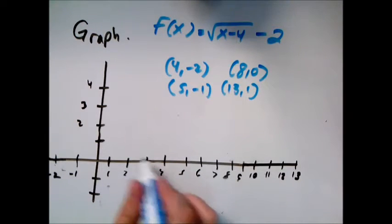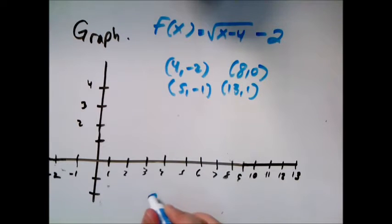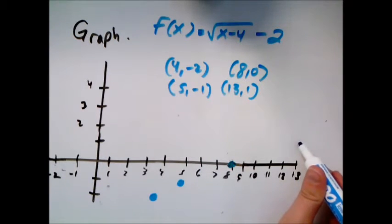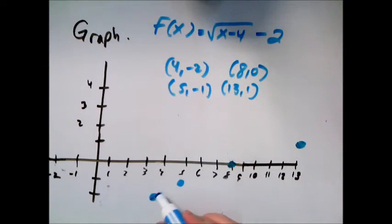All right, so 4, negative 2 is over 4 down 2; 5, negative 1 is over 5 down 1; 8, 0; and then 13 and up 1. So notice all these have the same basic kind of half parabola shape. It's just a matter of where they start and then getting enough other points to get the idea of where the graph goes.